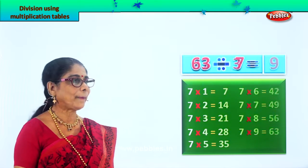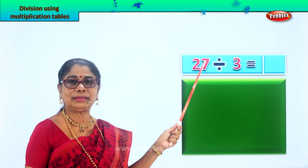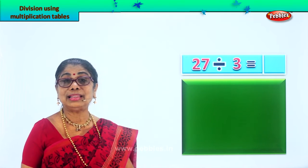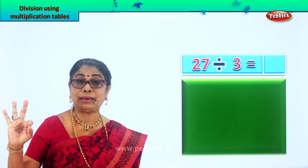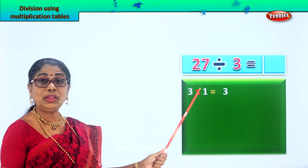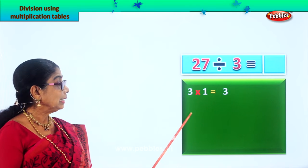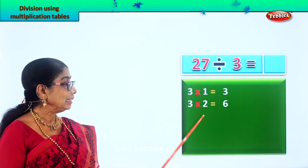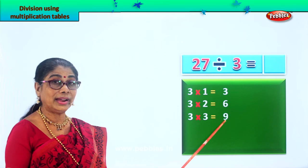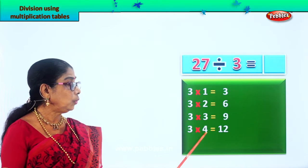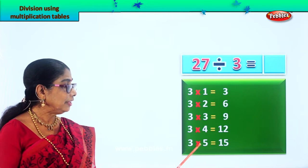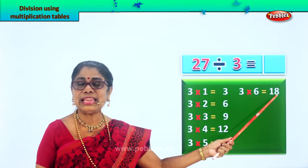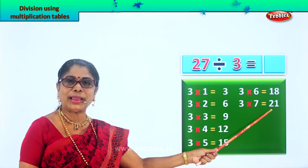Let's look at another sum. 27 to be grouped equally into 3 — let's see what the answer is. We need to know the 3 times table. Three ones are 3, three twos are 6, three threes are 9, three fours are 12, three fives are 15, three sixes are 18, three sevens are 21.